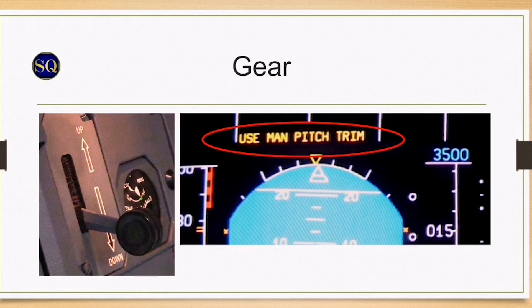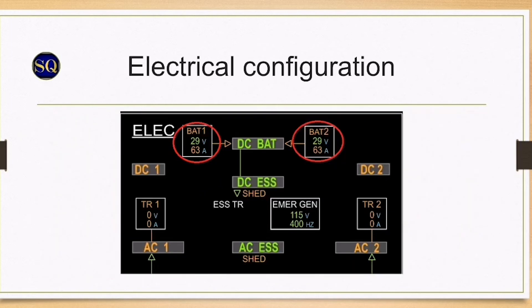Flight control law will revert to direct law. The emergency generator is not supplied when the gear is extended or if the emergency generator stalls below 140 knots. It depends on the aircraft serial number. AC shed essentials and DC shed. The emergency generation network is automatically transferred to the batteries. Flight time is now limited to a maximum of 22 minutes as batteries are the only remaining electrical source.